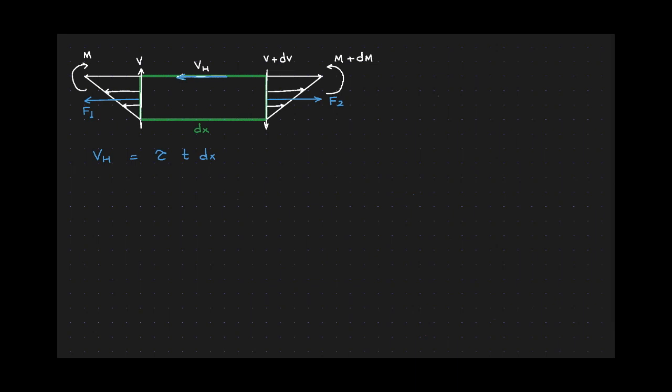f1 is equal to integral sigma dA. If you recall from your derivation of the flexural stress formula, sigma is equal to negative m y over i of the neutral axis. Let us substitute the sigma into the f1 equation.